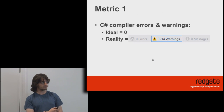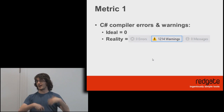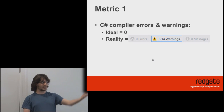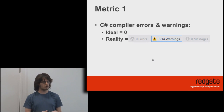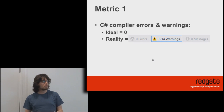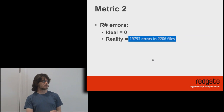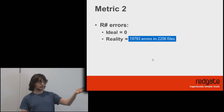These are just example metrics — you can pick your own. The first metric you might look at is how many compiler errors and warnings you've got. This is the SQL Compare UI, which includes the compare engine and everything else. It compiles, but there are a thousand warnings. If you spend time reducing that warning count, are we actually making the code better? Probably not. For Resharper errors, there are nearly 20,000 across two and a half thousand files. If you put the time in to reduce that count, are we actually making the code better? Probably not.